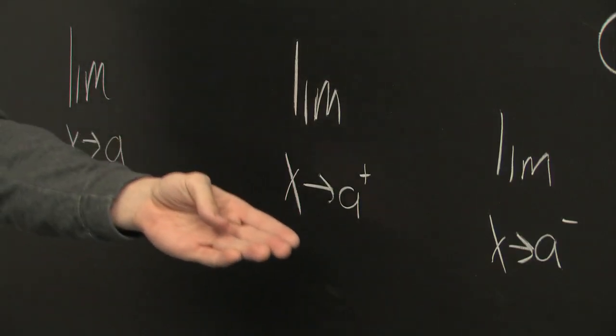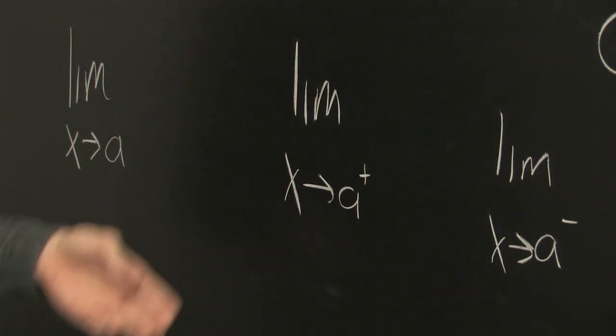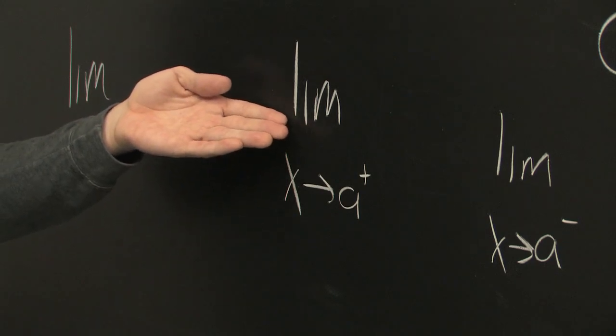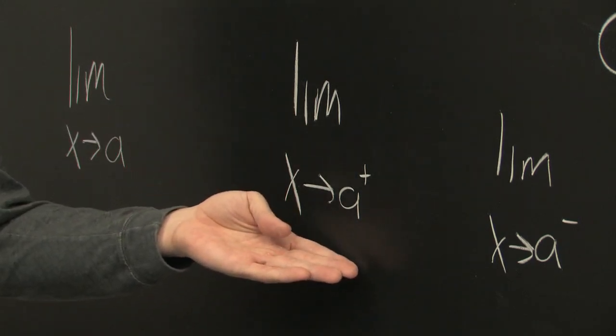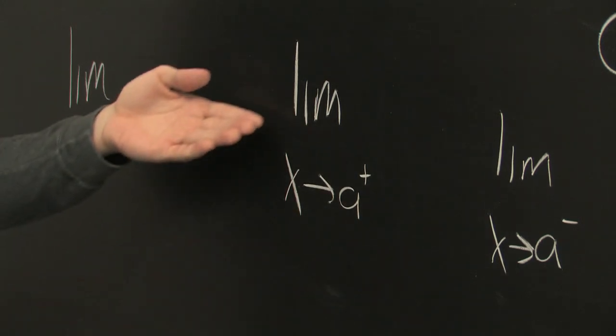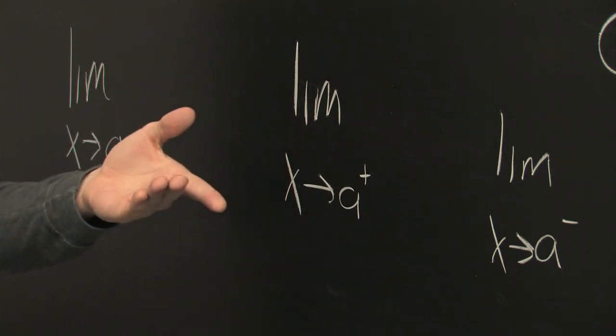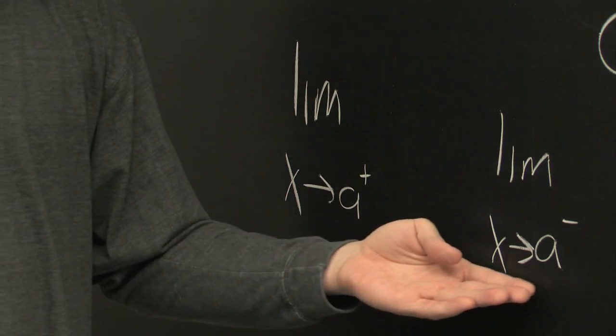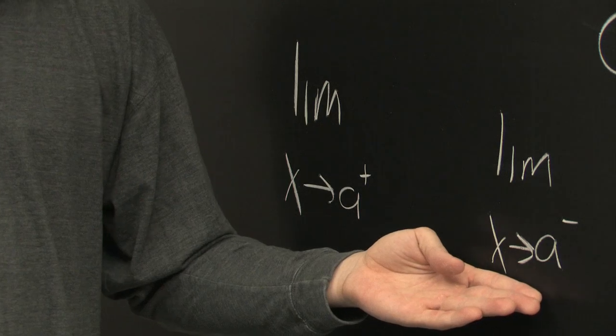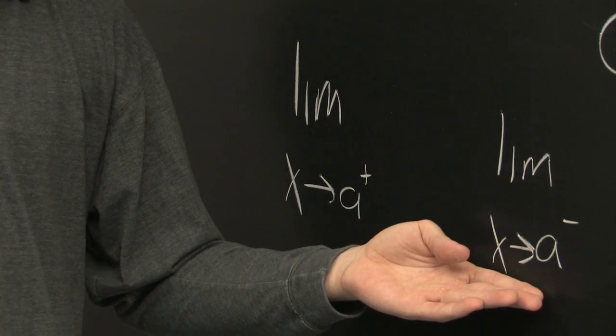But there are also one-sided limits as well. This we would read as the limit as x approaches a from the right, or x approaches a from the positive side. This is the limit as x approaches a from the left, or from the negative side.